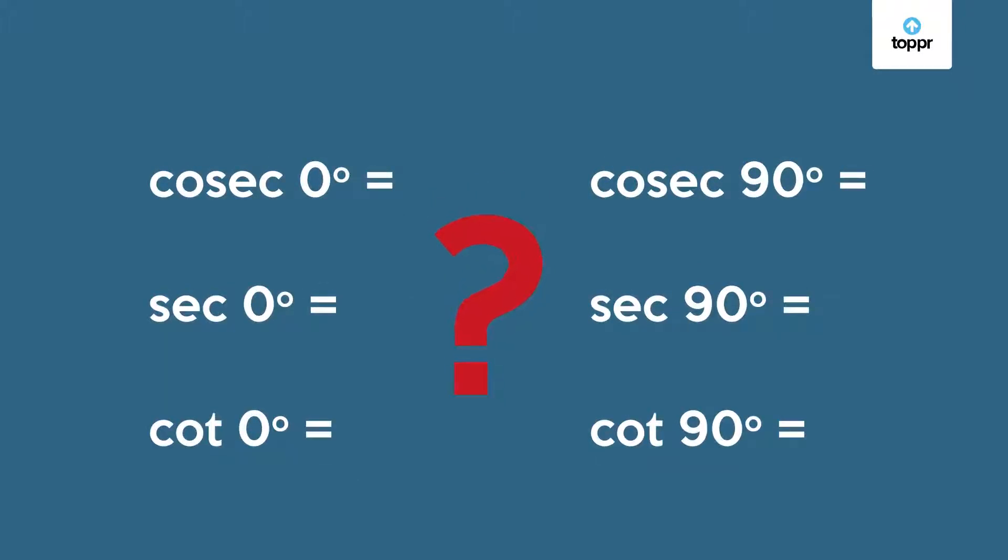Now as an exercise, try to define the cosecant, secant and cotangent of 0 and 90 degrees using the ideas we've discussed. That concludes our discussion of these two special angles 0 and 90 degrees.